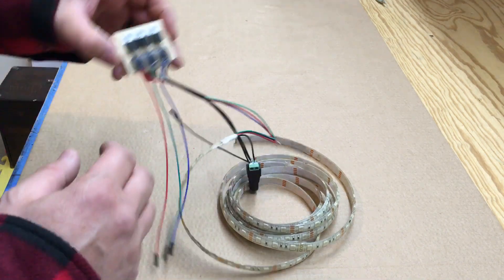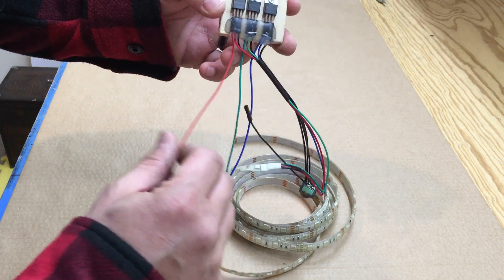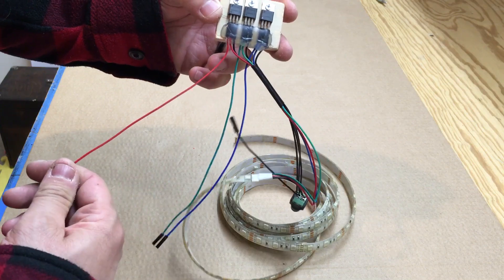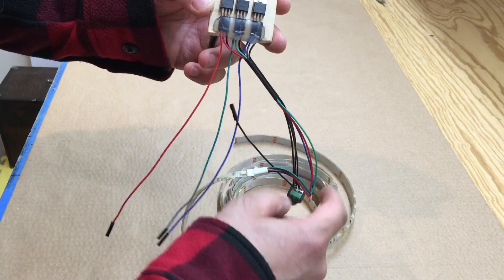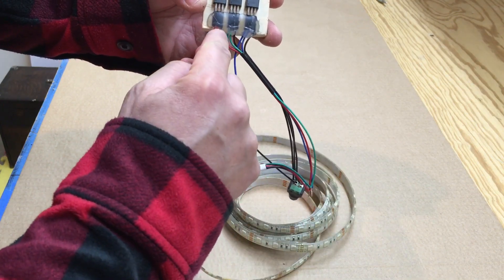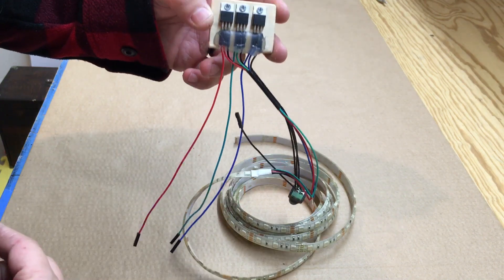But like I said, to go over looking at it straight on, first one goes to the Pi, the middle goes to the LED strip, and the last one on the right goes to the ground.